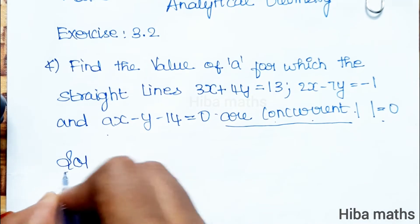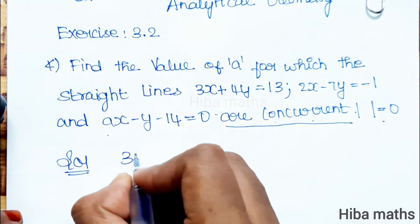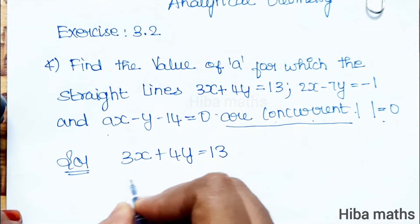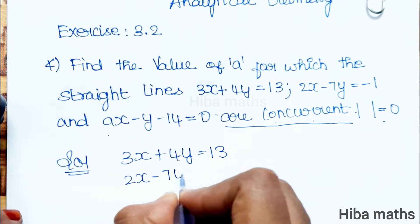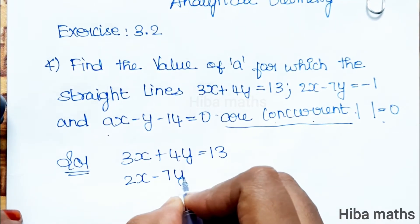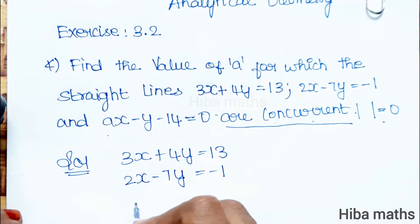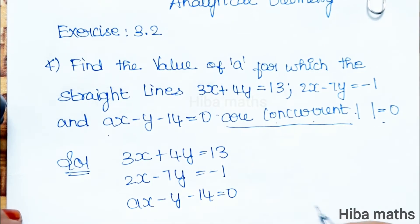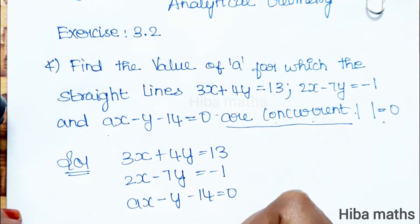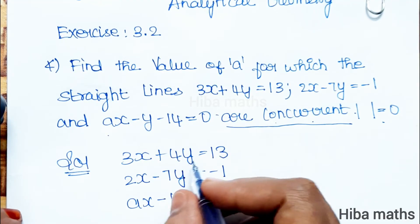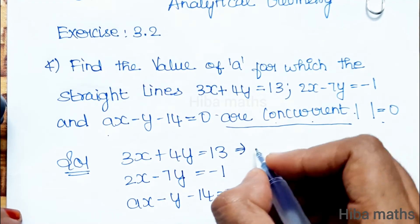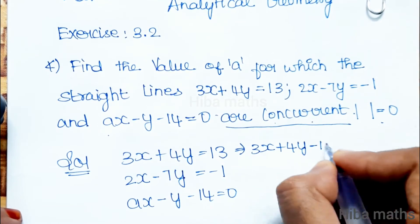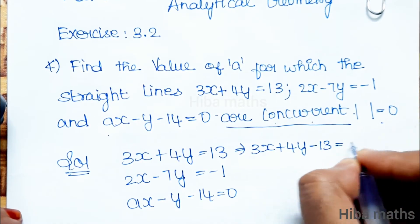The solution is very easy. We have 3x plus 4y is equal to 13, 2x minus 7y is equal to minus 1, ax minus y minus 14 is equal to 0. We will rearrange: 3x plus 4y minus 13 is equal to 0.